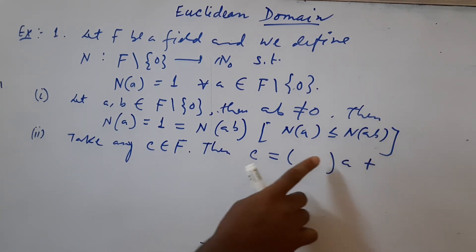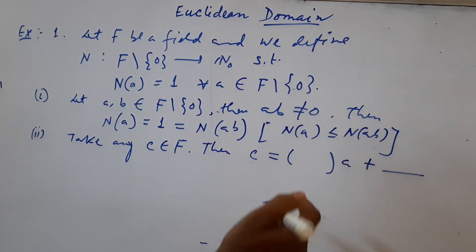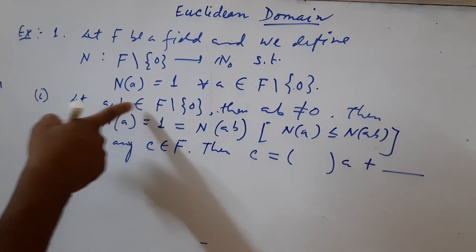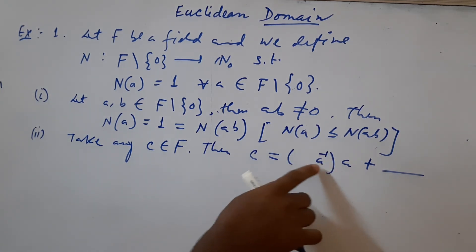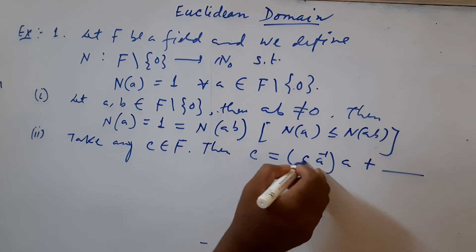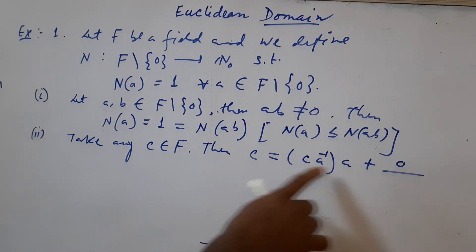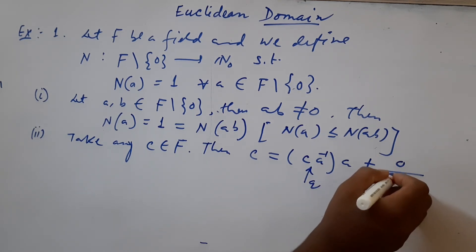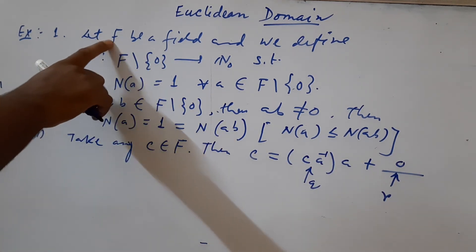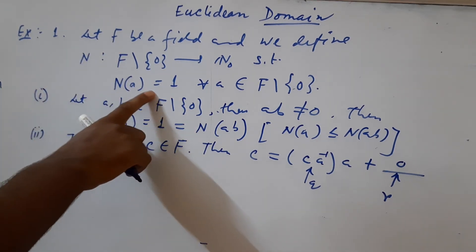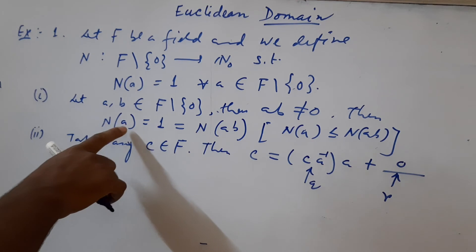We have to fill in this blank. We want c on the right hand side. Here a is non-zero and a is in field, so a inverse exists in F. If we put a inverse over here and multiply, we will get 1. But here c is given, so we must take c over here, and the remainder is 0. So c can be written as a times a inverse c plus 0. This is the quotient we need and this is the remainder we need. We see that in this field F, if we define N by this one, division algorithm will be obtained and condition one will be satisfied.